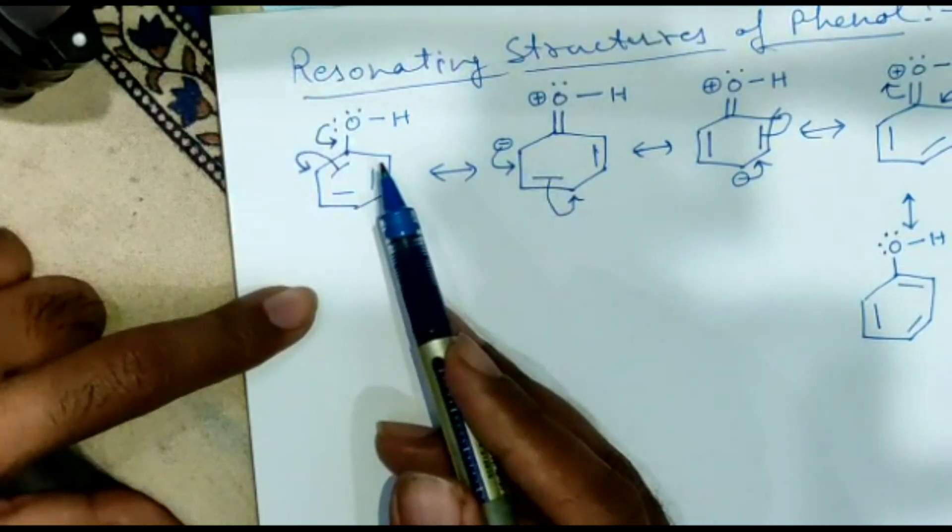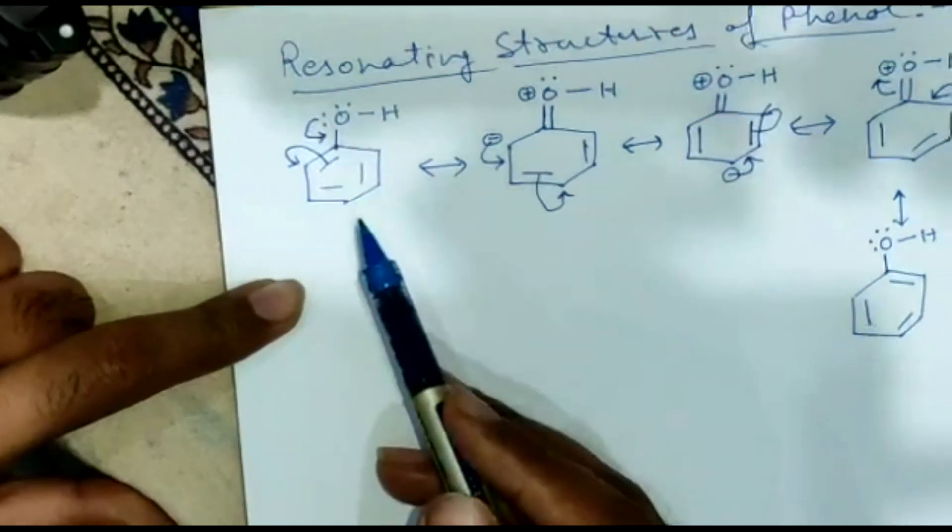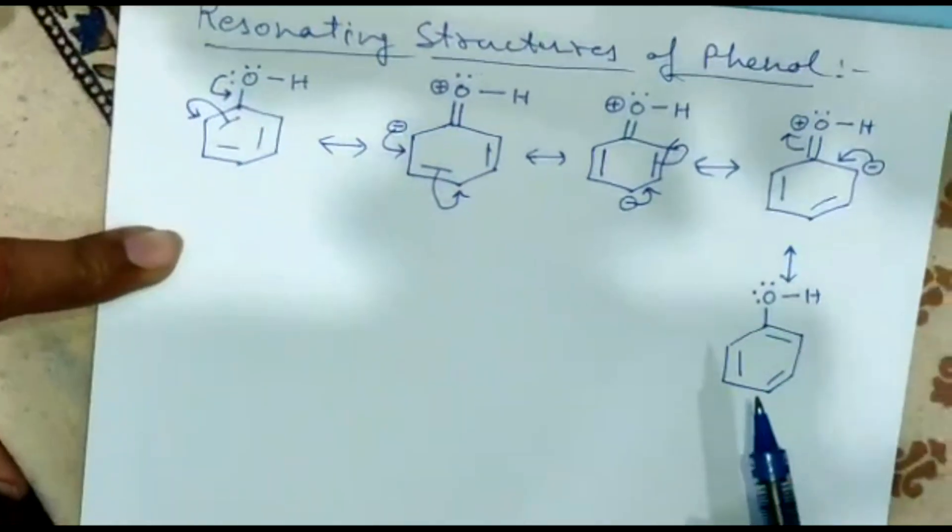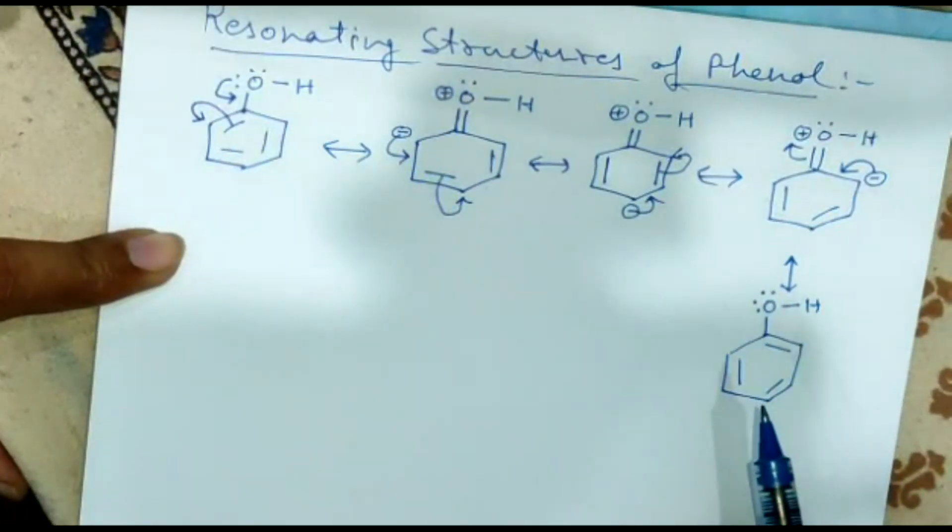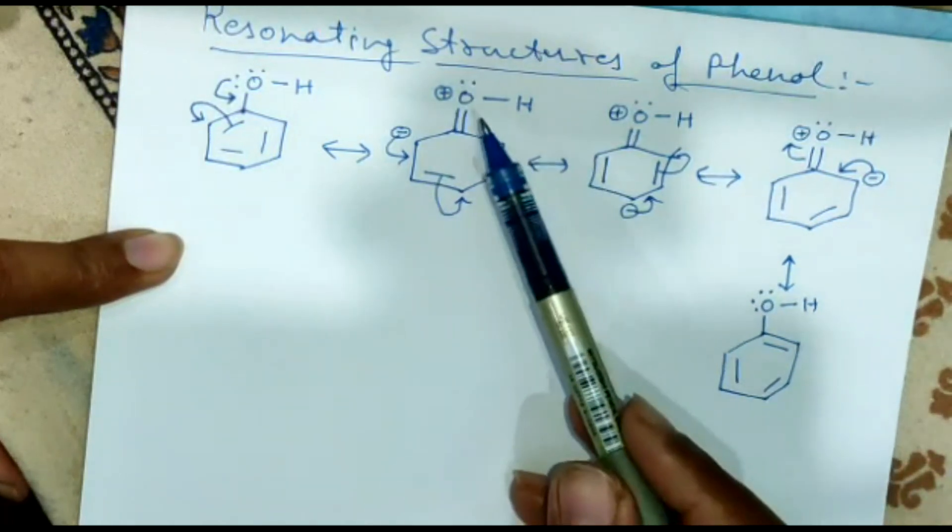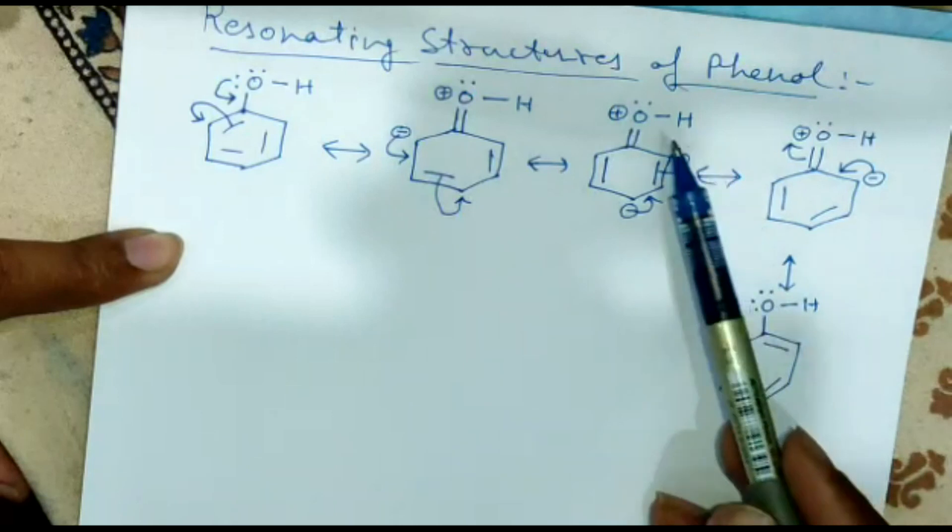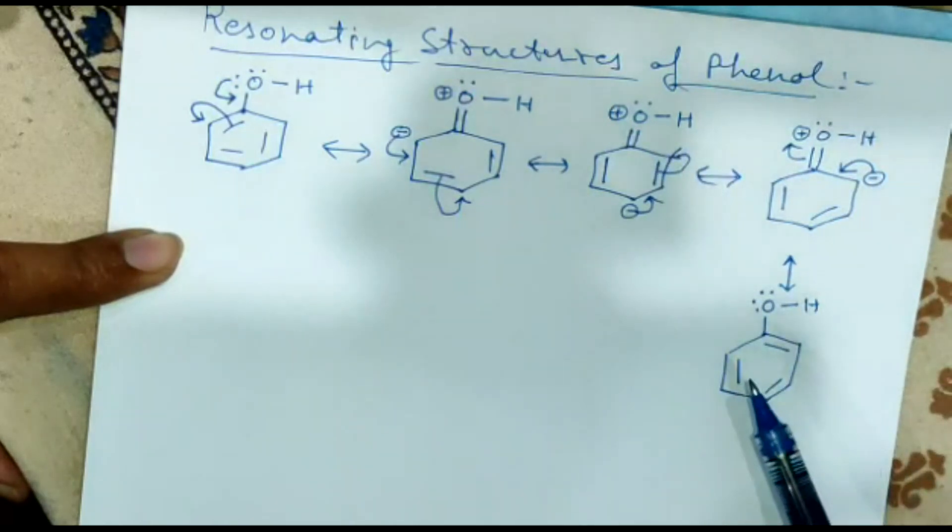Okay, and this is how this charge is delocalized in the complete ring of benzene in the structure of phenol. And the bond between this oxygen and carbon attains a double bond character due to which it becomes difficult to break this one. That's the beauty of the resonance. Thank you.